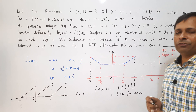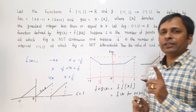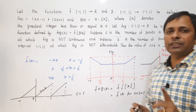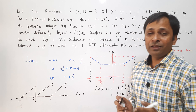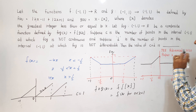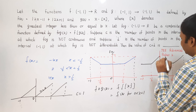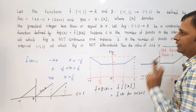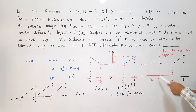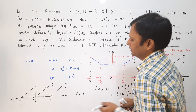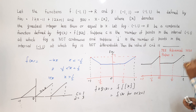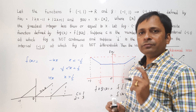Now we find the points where the function is not differentiable. Wherever the graph has a sharp corner — at x = 1/2 and x = −1/2 — the function is not differentiable. Additionally, wherever the function is not continuous it is also not differentiable, so add x = 0. The endpoints −1 and 1 are excluded since we have the open interval. So the function is not differentiable at three points: x = −1/2, x = 0, and x = 1/2. Therefore d = 3.